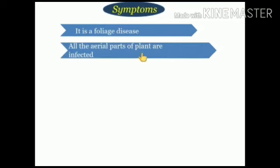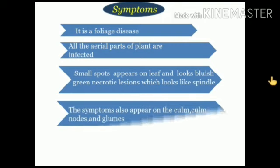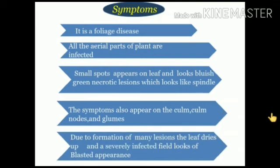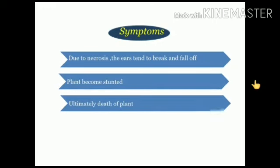Summarizing the symptoms: it is a foliage disease and all aerial parts of the plants are infected. Small spots appear on leaves as bluish-green necrotic lesions which look like a spindle. Symptoms also appear on culm nodes and glumes. Due to the formation of many lesions, the leaf dries up and a severely infected field looks like a blasted appearance. Due to necrosis, the ear tends to break and fall off. Plants become stunted and ultimately death of the plant occurs.